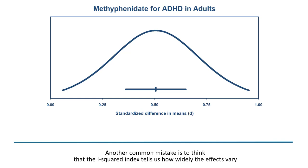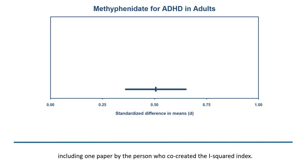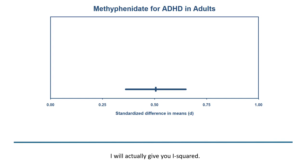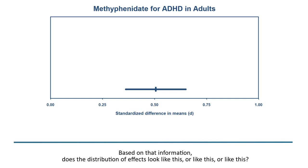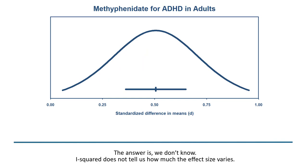Another common mistake is to think that the I-squared index tells us how widely the effects vary. In fact, I-squared does not provide this information. I can show you empirically: in this analysis, I-squared is 47%. Based on that information, does the distribution of effects look like this, or like this, or like this, or something else entirely? The answer is: we don't know. I-squared does not tell us how much the effect size varies.